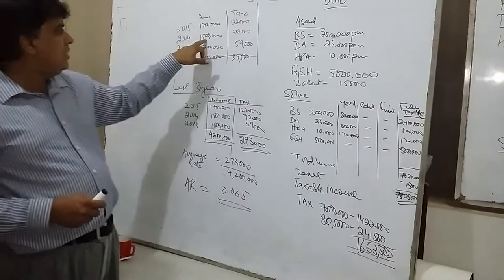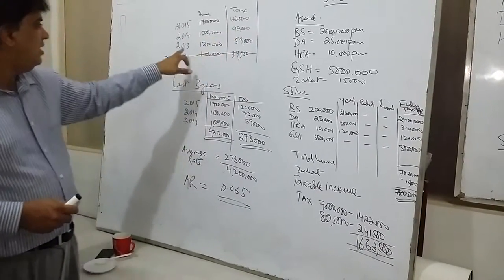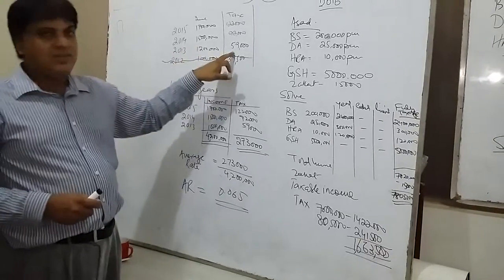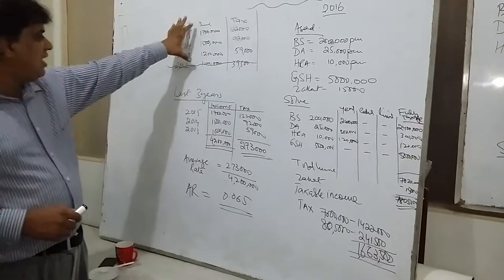In 2014, it was 15,000,000 income and it was 9,000,000 tax. And in 2013, it was 12,000,000 income and it was 59,000 tax. We have to remove this average.